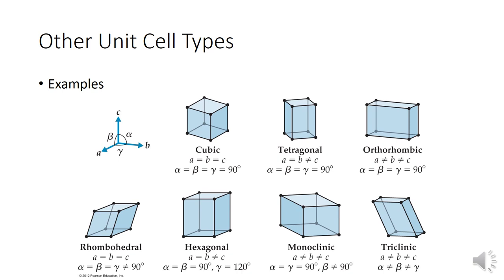These are other types of unit cells that exist, characterized by their geometry. For example, here A and B are the same but C is different, giving you a rectangular polyhedron. Here's orthorhombic, triclinic, rhombohedral — where none of the angles or sides are the same. This looks more like the gypsum we saw earlier. You don't have to memorize these geometries — we spent most of our time on body-centered cubic and face-centered cubic. These are just to show you that other types of unit cells exist.